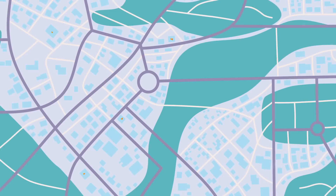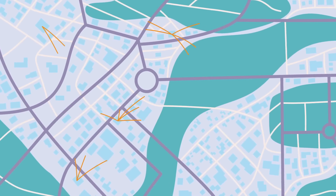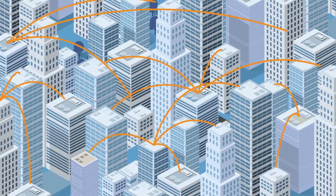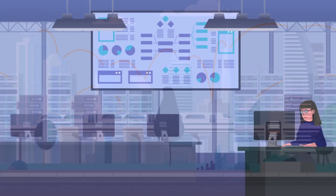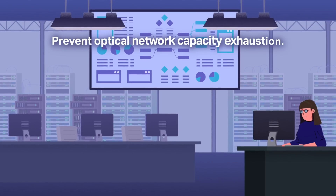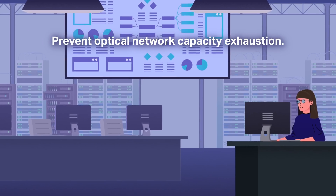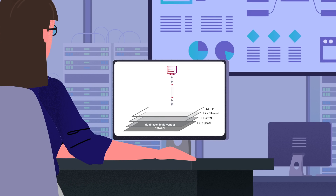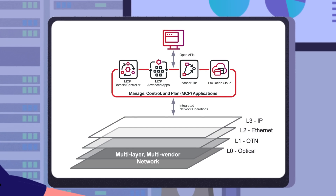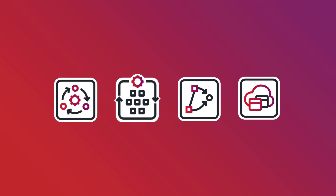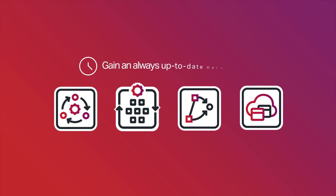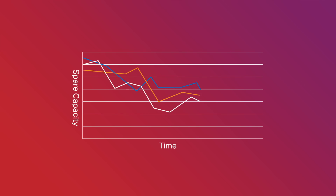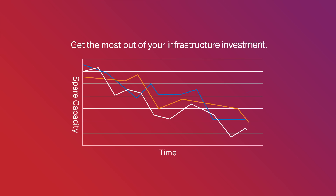Your Network Operations Center is a hub of activity to support high performance, reliable connectivity services. If you're facing the need to prevent optical network capacity exhaustion, level up to intelligent network control with Ciena's MCP applications. These powerful tools provide an always up-to-date network view and the ability to analyze and act on usage trends to get the most out of your infrastructure investment. Let's see how.